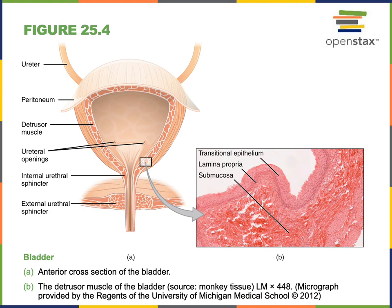During micturition, the smooth muscle in the wall of the urinary bladder — known as the detrusor muscle — contracts. This forces urine out of the urinary bladder. The ureteral openings have one-way valves that prevent urine from flowing backward toward the kidneys, and the urine is squeezed out through the urethra.